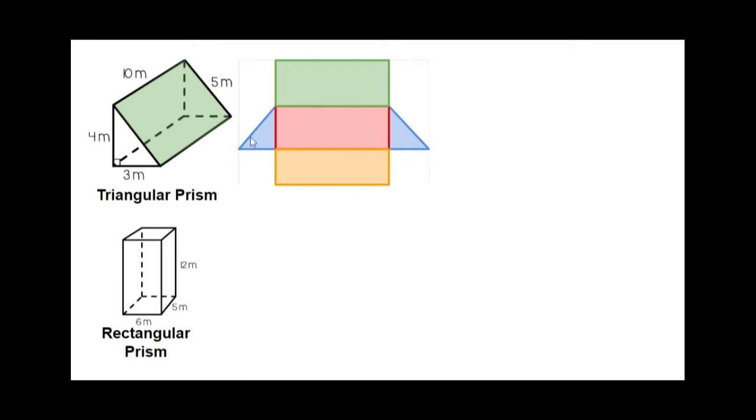That is not the only type of prisms that there are. There are also pentagonal prisms. So a pentagon has five sides so that means it's going to have five rectangles connecting the two bases.